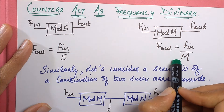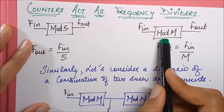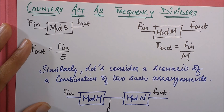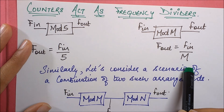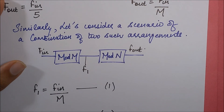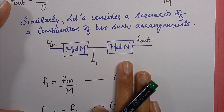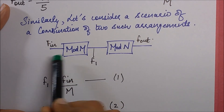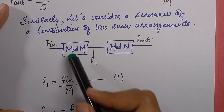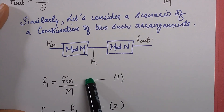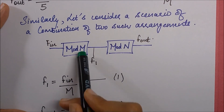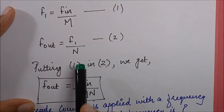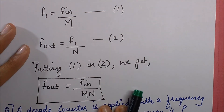In general, for a Mod m counter — a counter having m stages — f_out equals f_in divided by m. Now if I take a combination of two such counters, a Mod m followed by a Mod n counter, with an intermediate frequency between them, then at the first stage f1 equals f_in divided by m, and at the second stage f_out equals f1 divided by n.